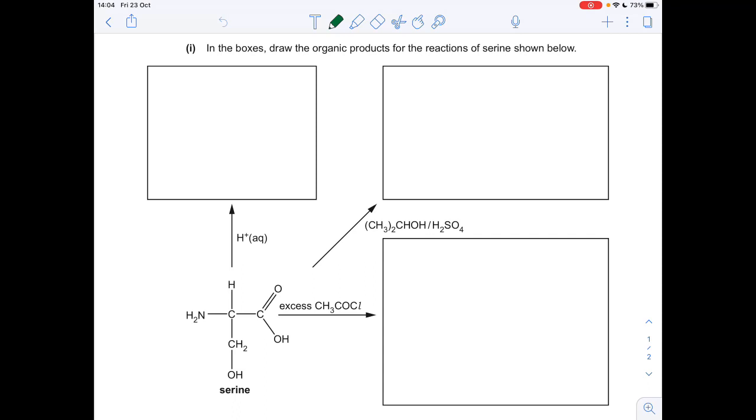So we'll start with the H plus. The H plus can obviously add on to this part here, the amino group, so basically that's just going to become an NH3 plus group. Everything else will just stay the same.